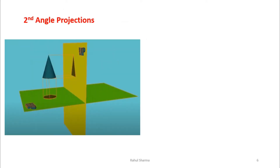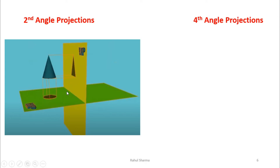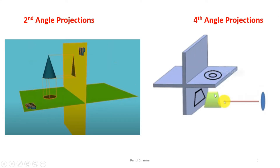We use second and fourth quadrants for projection of points because a point is just a dot as both front and top view, so overlap doesn't matter. But when a complex object or even a line is present, if lines overlap they intersect or cross, and we cannot identify the actual shape. In second angle projection, for example, placing a cone gives a triangle on VP and a circle on HP — when HP is rotated, the circle overlaps the triangle.